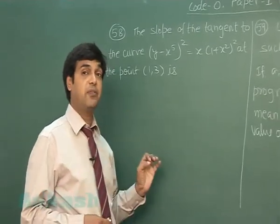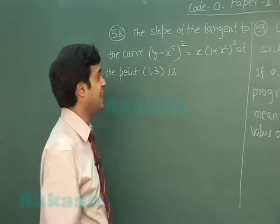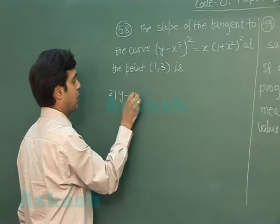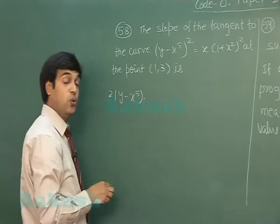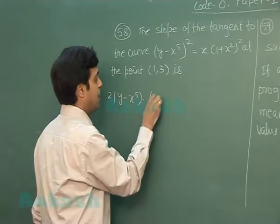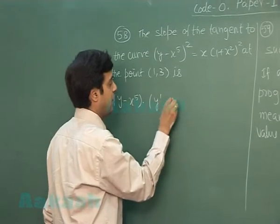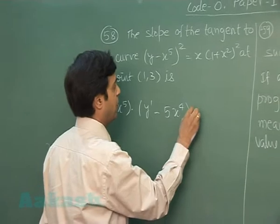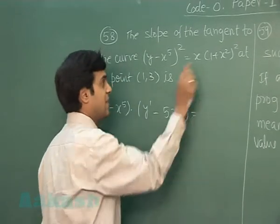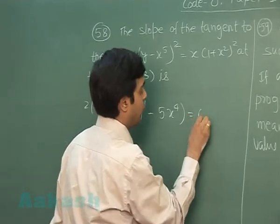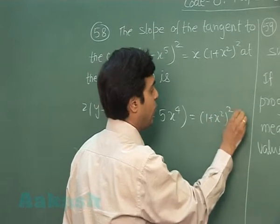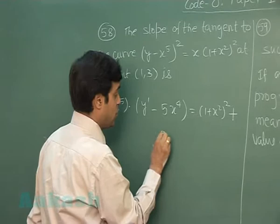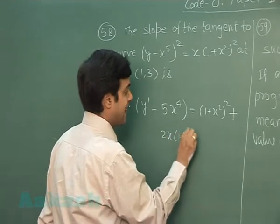To find the slope of the tangent, differentiating implicitly we get: 2(y - x⁵) multiplied with (dy/dx - 5x⁴) equals (1 + x²)² + 2x(1 + x²)·2x.